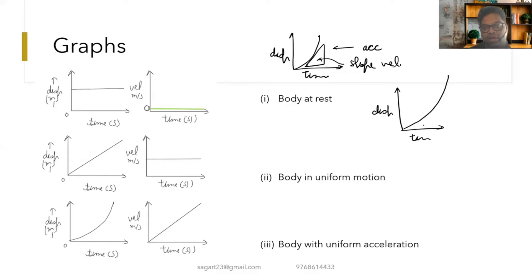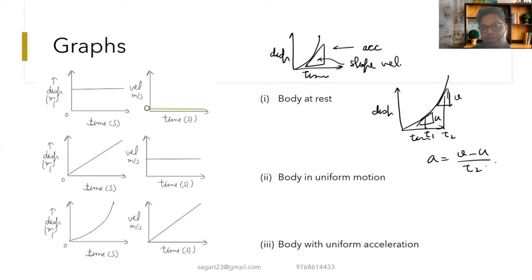For the curved displacement-time graph, you draw tangents at two different points to find velocities v and u at times t1 and t2, and from those you can calculate acceleration. However, this method will only be covered in 11th standard and not right now.